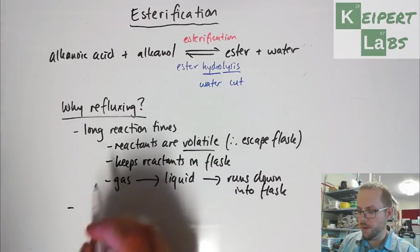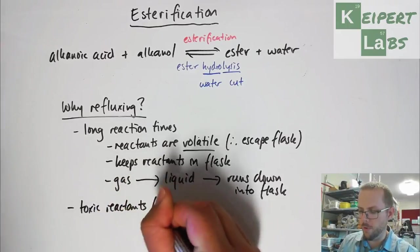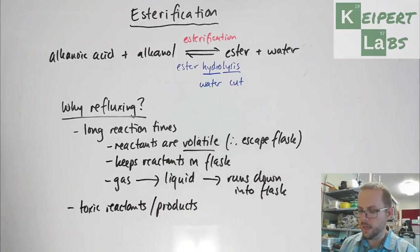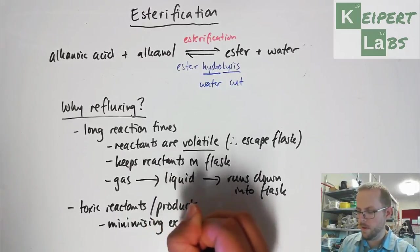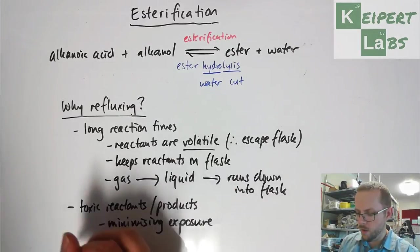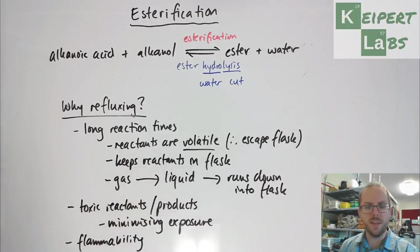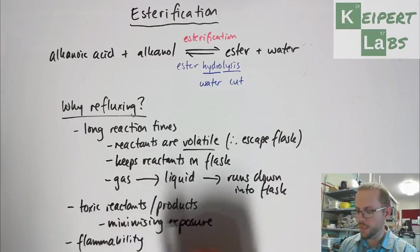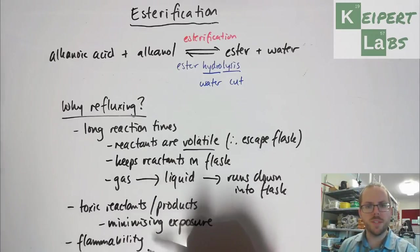And what we also have is that we have toxic reactants and or products, depending on the ester that we're making here. And so because these reactants, we're thinking about hydrocarbons or carbon-based compounds, which are often very flammable. And so what it does is that not only does it minimise exposure to us breathing in toxic substances, but it also stops those vapours from escaping and then catching on fire. So that's also from a safety point of view.